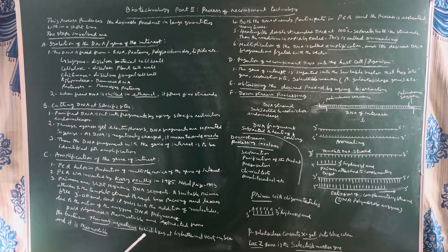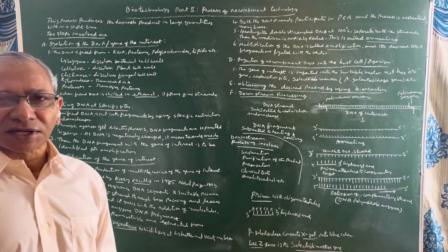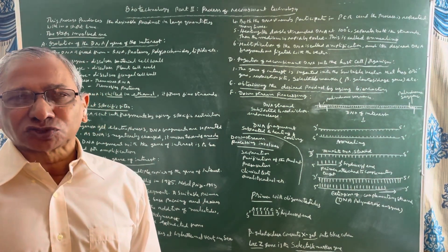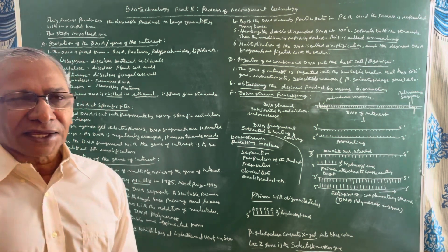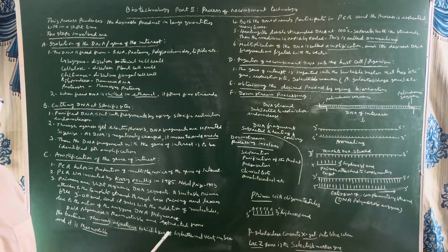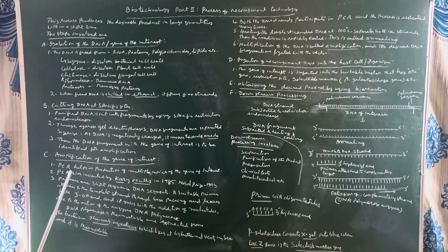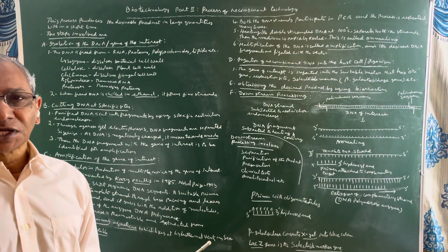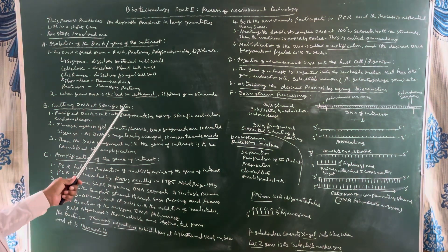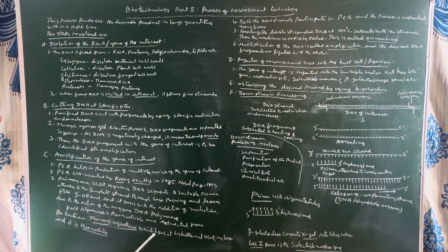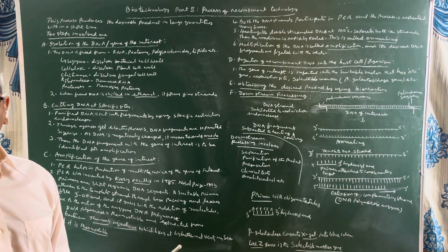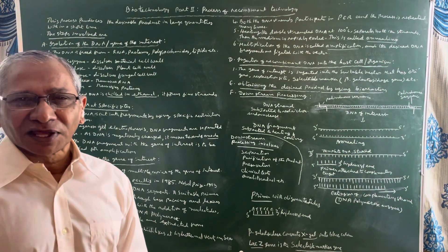DNA is always associated with RNA and proteins. These proteins occur in the form of histone proteins and non-histone proteins. RNA is removed by using the enzyme ribonuclease, and proteins are removed by using the enzyme proteases. In this way, DNA is freed from all the attached substances and it is subjected to cold ethanol or chilled ethanol. As a result, the DNA strands appear as fine threads, and then these threads are collected.